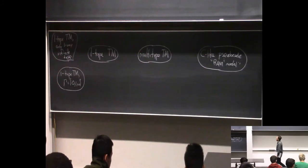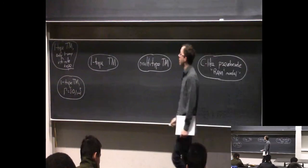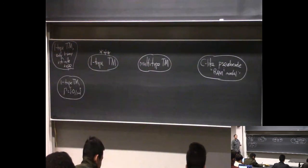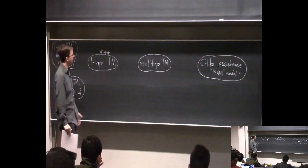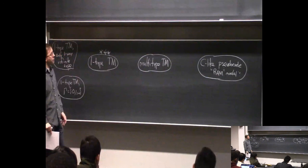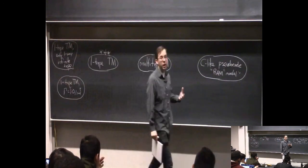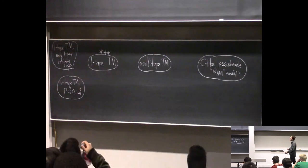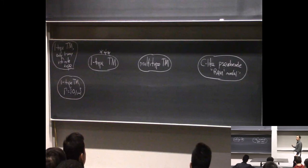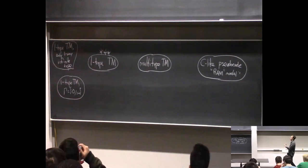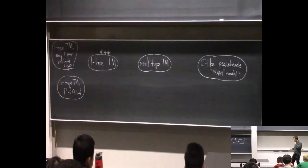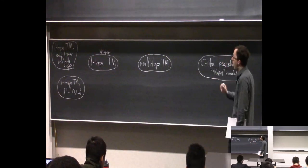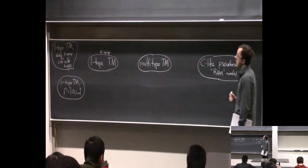As we mentioned last time, we defined the one-tape Turing machine, and this is going to be our official model for algorithms. But as I mentioned, there are many variants of Turing machines, and ones that are more or less realistic. As we'll see today, they can all simulate each other. By the Church-Turing thesis, they can all compute the same functions or the same decision problems. In fact, they can all simulate each other somewhat efficiently, which is reassuring. So the notion of polynomial time on one is the same as polynomial time on another.